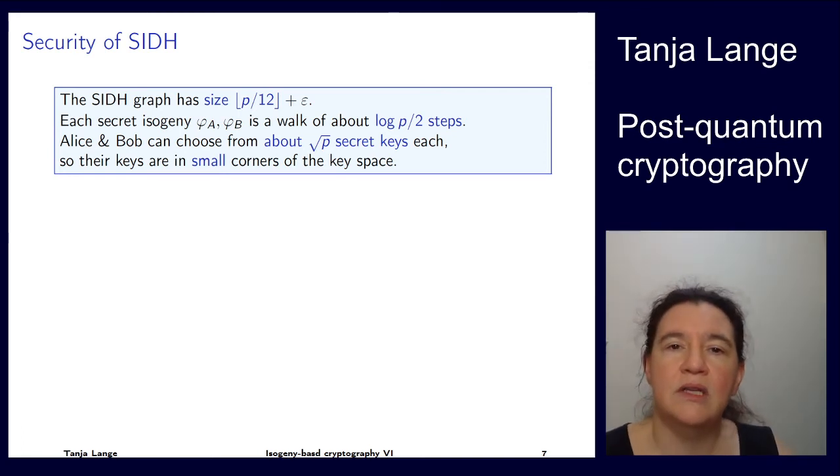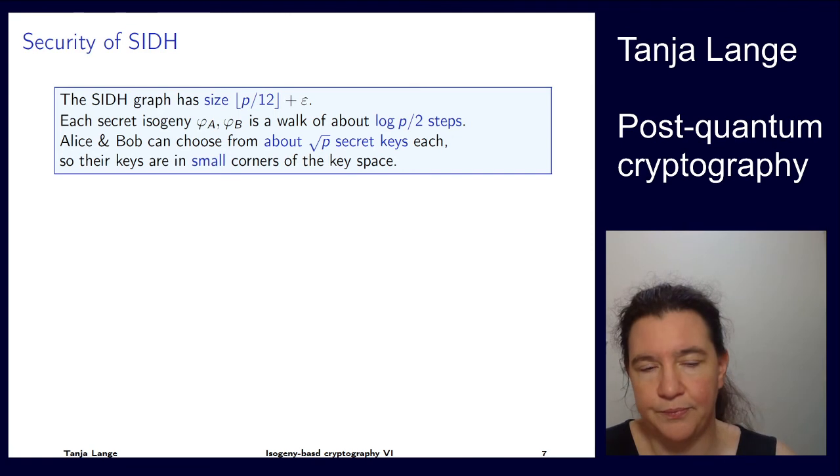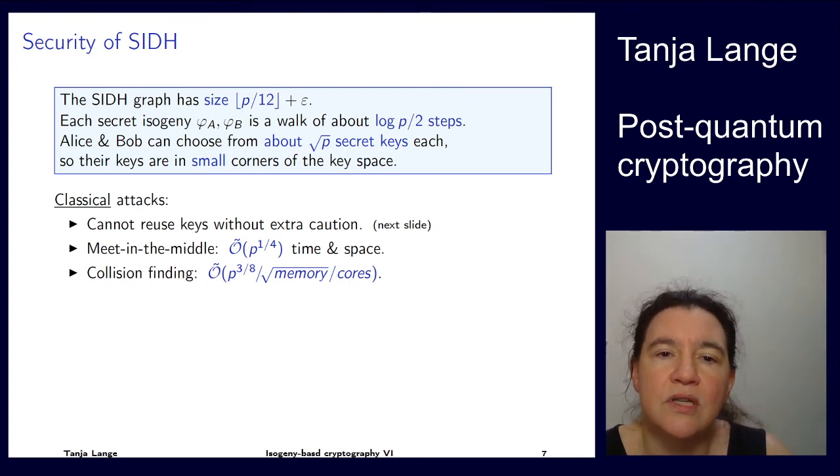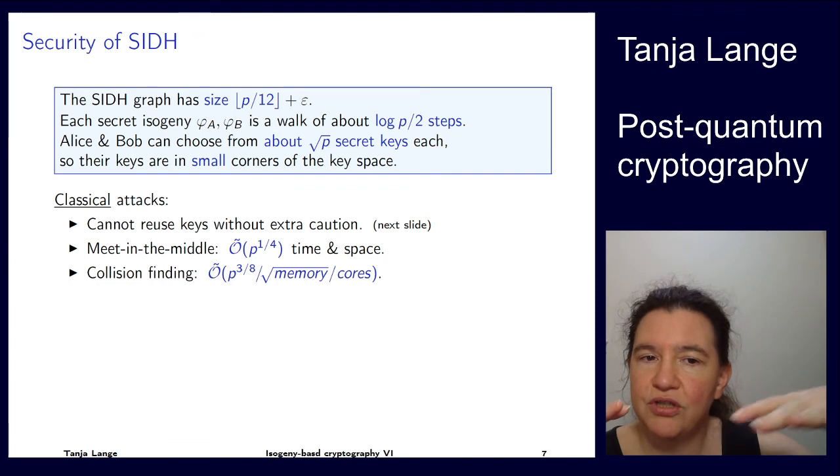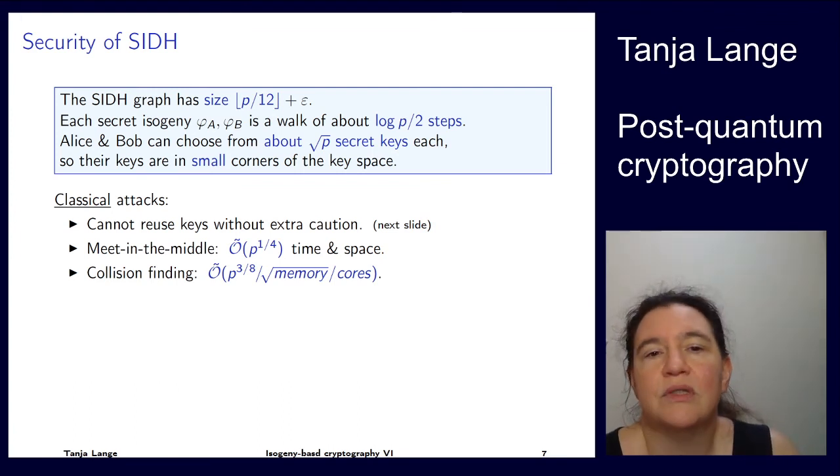A nice part is these isogenies can get pretty far. So these graphs have nice properties about mixing, but still the walks are comparably short. If you're looking at classical attacks, so pre-quantum attacks, then you can do meet-in-the-middle attack in square root of p. However, you also need that much space. So that is actually worse than in C-SIDH, and it comes from the fact that there is no sense of direction. So for C-SIDH, you get a fourth root of p without memory, and here it's fourth root of p time and memory. You could try to do collision finding where you do something more in parallel, and then you're getting a complicated formula. But okay, so it's fourth root of p, but an expensive version of it.